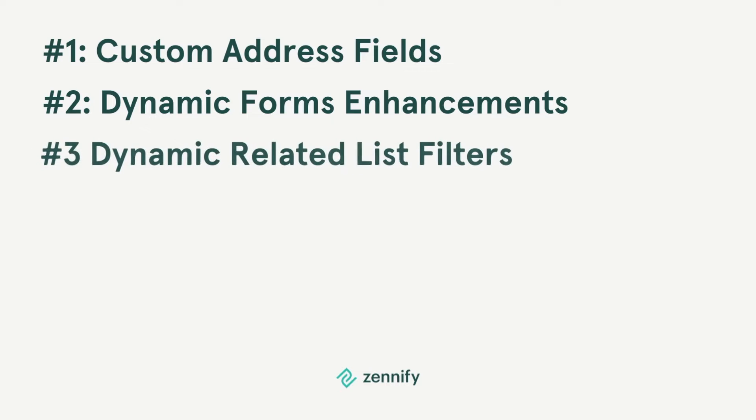Number three: dynamic related list filters. Filtering using just one picklist value is so summer of 22, but you don't have to limit yourself anymore. Enhance search capabilities by using multiple filter values to get those insights faster. For example, if you want to compare cases with high and medium priority, you can now do that in a single search rather than having to create and compare two separate lists.